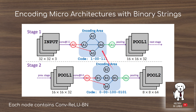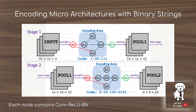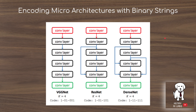Each of these nodes — A1, A2, A3, and A4 — contain a 3x3 convolution, followed by a ReLU activation, followed by batch normalization. This is how the binary bit string used in the Genetic CNN can find popular convolutional network architectures like VGGNet, ResNet, and DenseNet.